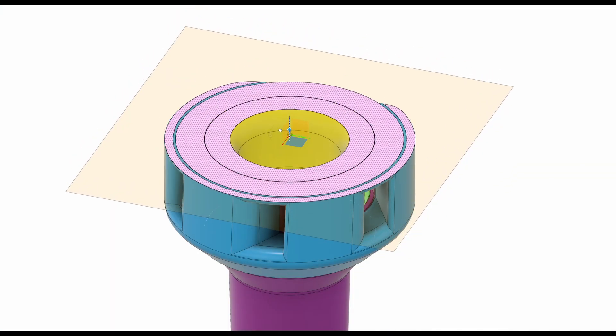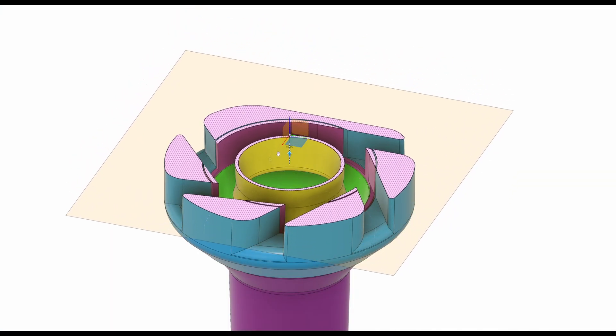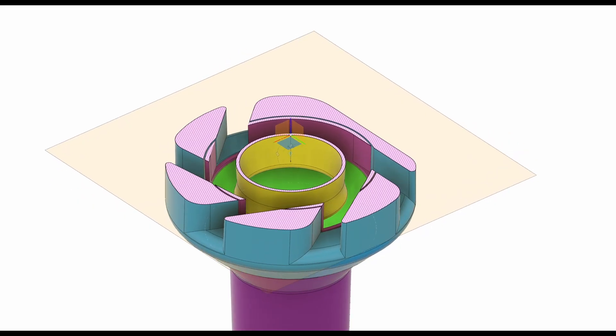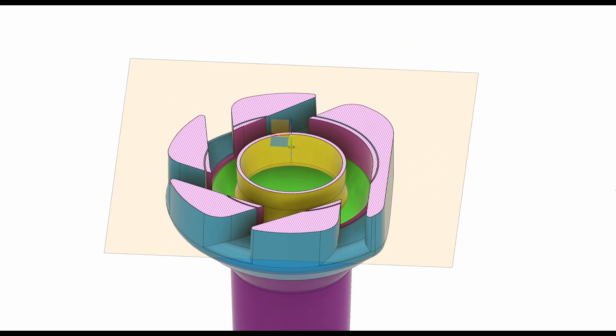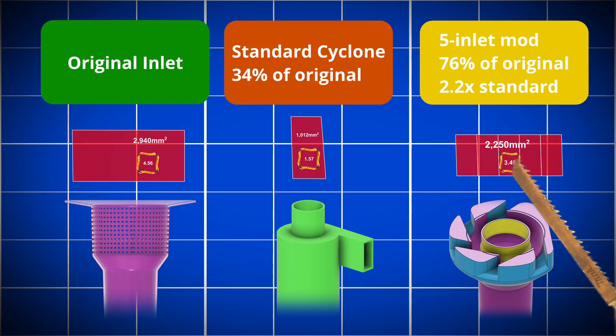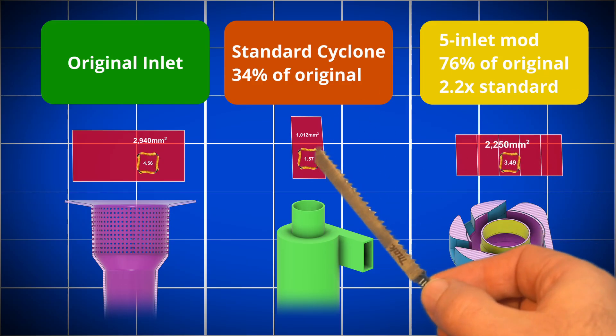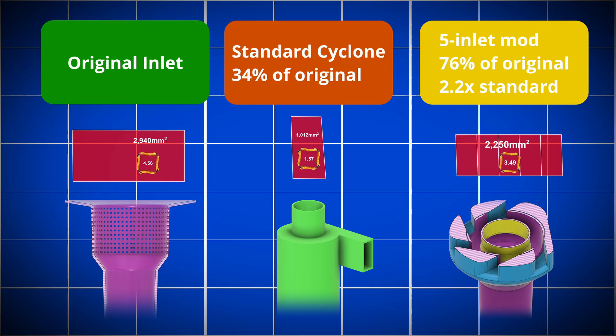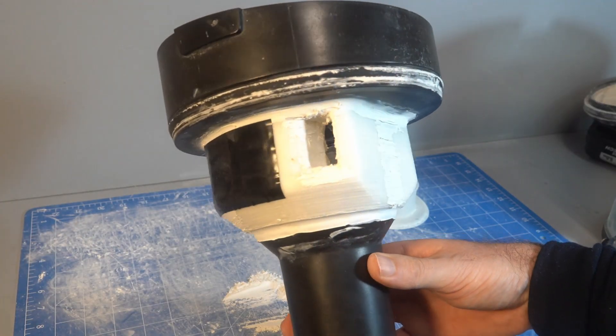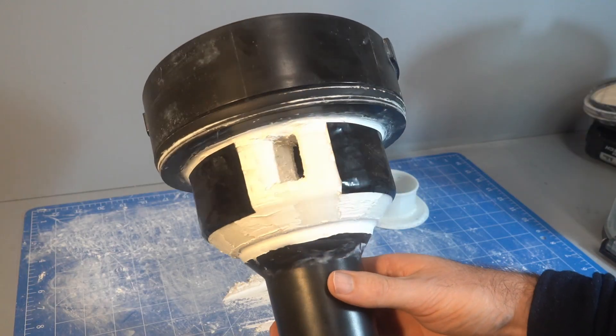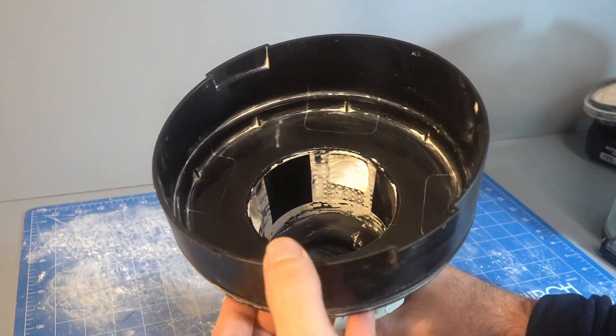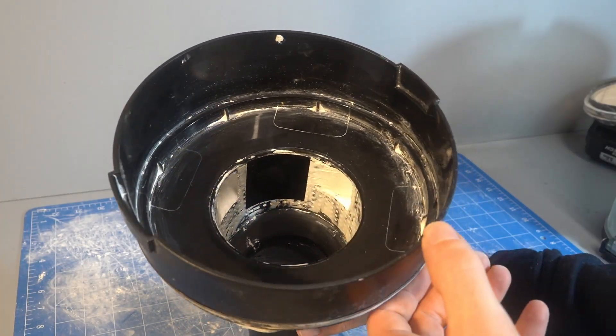To get the inlet area up I'm going to use multiple inlets. Five inlets was the most I could reasonably fit in and this takes me to 2250mm². This is double the inlet area of a standard cyclone which will help reduce flow losses but it will probably reduce the collection efficiency. However, we can block some of these inlets in order to tune the separator and find a happy medium between flow rate and filtration efficiency.